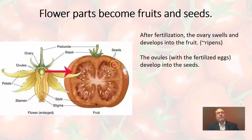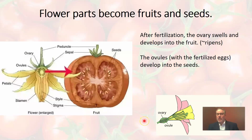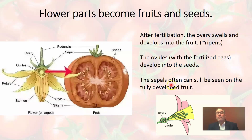The ovary becomes the fruit, and the ovules become the seeds — which is why we find seeds inside fruit. It's interesting that when picking fruits like apples or tomatoes, you can often still see some of those flower parts. Next time you eat a fruit, look for evidence of the sepals — those parts that once protected the flower while it was developing.